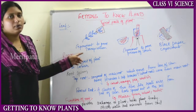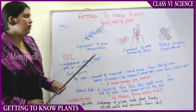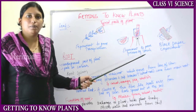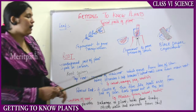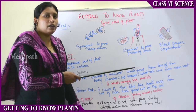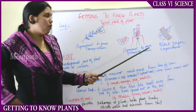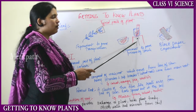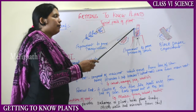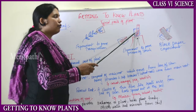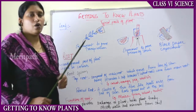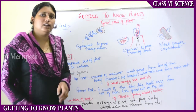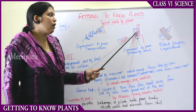This experiment proves the transpiration function of the leaf. Another experiment is done to prove the presence of starch. Starch is the food of the plant — through photosynthetic activity, plants prepare food which is stored as starch or carbohydrates. For this experiment, take a stand and put a beaker filled with water on it, then heat the water with a burner.